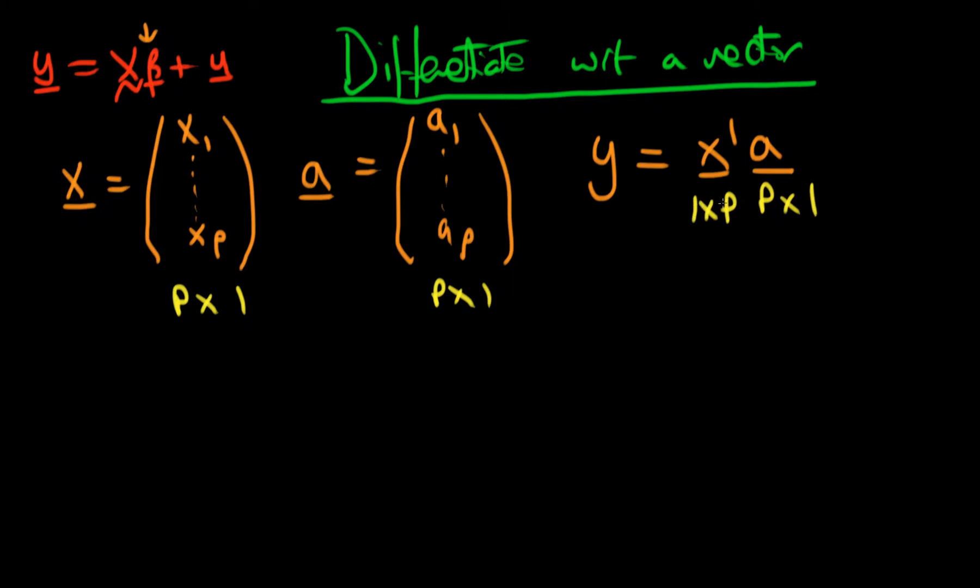In matrix multiplication, when we have two things next to each other and they have the same inner indices touching, those indices cancel and we're just left with the outer indices. So in fact, we've just got a 1 by 1 thing coming out of this. So y is actually a scalar.